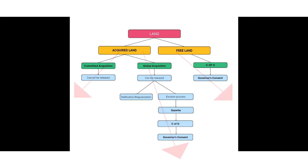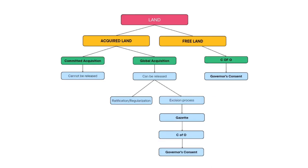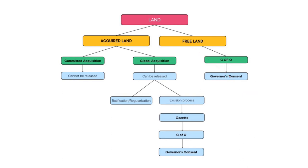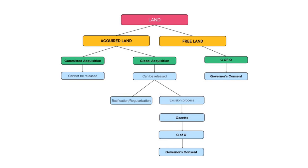So you see, there are three separate routes. The key point to note is that it is always best to buy lands that are free of government acquisition — which is freehold — or lands that are under global acquisition, which can be released. But lands that are under committed acquisition can never, ever be released.